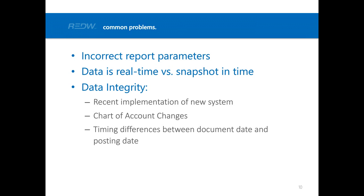Data integrity: many software systems allow you to test whether your data is in good shape. For example, you can verify that your GL detail and GL summary match, or that your accounts payable detail matches your GL. Systems provide tools to confirm data is intact. One obvious sign your data is not balanced is if your standard balance sheet from the system doesn't balance — you may have a report setup issue or your data may be corrupt.